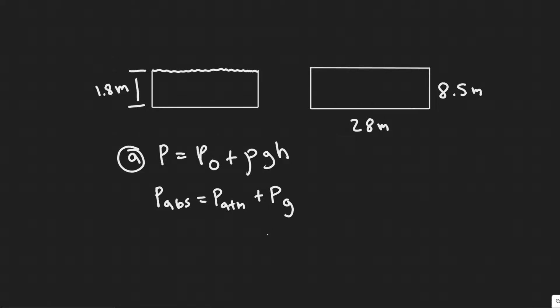In this problem we're told: determine the total force and the absolute pressure on the bottom of a swimming pool 28 meters by 8.5 meters, whose uniform depth is 1.8 meters. Part B asks: what will be the pressure against the side of the pool near the bottom?